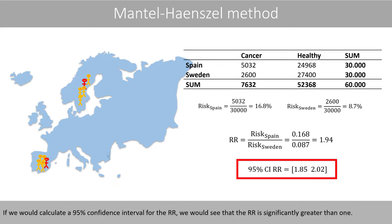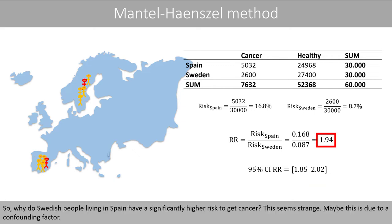If we calculate the 95% confidence interval for the relative risk, we would see that the relative risk is significantly greater than 1. So why do Swedish people living in Spain have a significantly higher risk to get cancer? This seems strange.